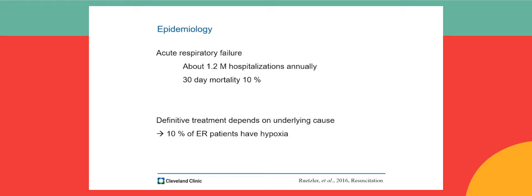The definitive treatment of acute respiratory failure mostly depends on the underlying cause, but patients often require treatment in the ambulance during transfer to the hospital. At that point, it is difficult to accurately determine the underlying cause, so out-of-hospital treatment often follows a common pathway rather than being specific to the underlying cause. It's also important to understand that about 10% of patients admitted to the emergency room via ambulance have signs of hypoxia, even though oxygen is being applied.